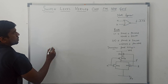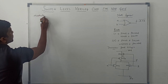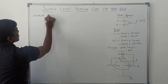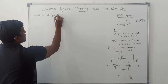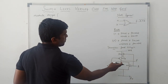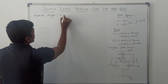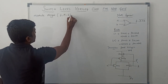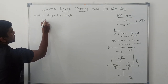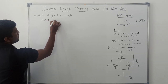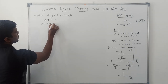Now I am going to write the Verilog actual code for the NOR gate. As usual, first write module. The module name is NOR_gate. Within the bracket, mention the input and output variables: output variable is F, then A, B. After that, declaration of input variables and output variable: input A, B, then output F.